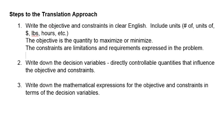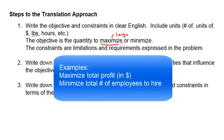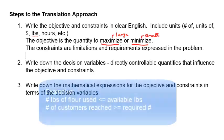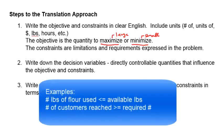The first step is to write the objective and the constraints in clear English, including the units like number of books, units of something, dollar amount, pounds, hours, and so forth. The objective is the quantity that we want to maximize, that is, make it as large as possible, or a quantity to minimize, that is, make it as small as possible. The constraints are limitations and requirements expressed in the problem. Each constraint restricts some quantity to be less than or equal to, greater than or equal to, or equal to some value.